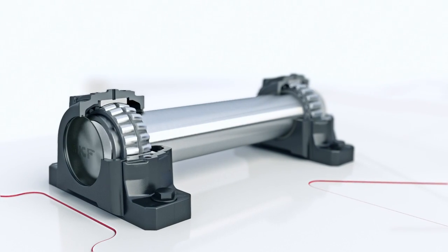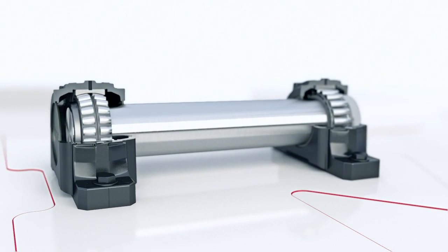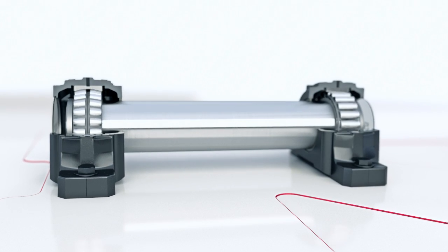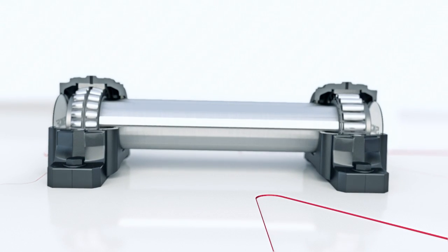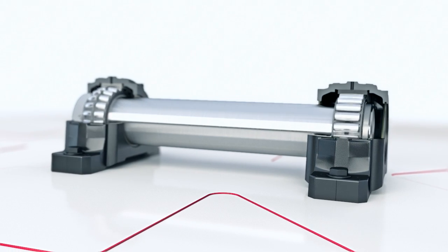With the SKF self-aligning system, design engineers are able to optimize design, downsize, avoid fretting corrosion and increase robustness. It fits in SKF standard bearing housings.